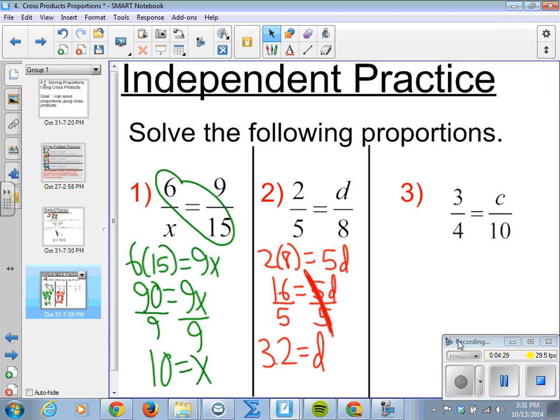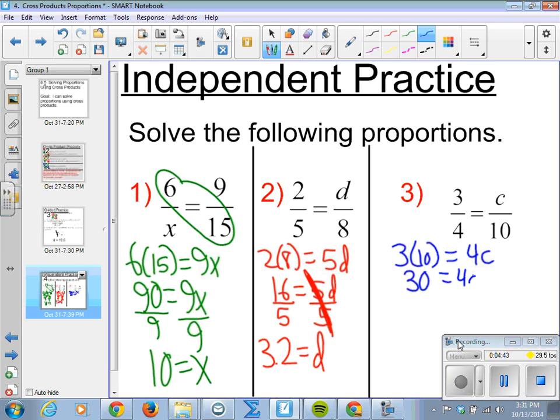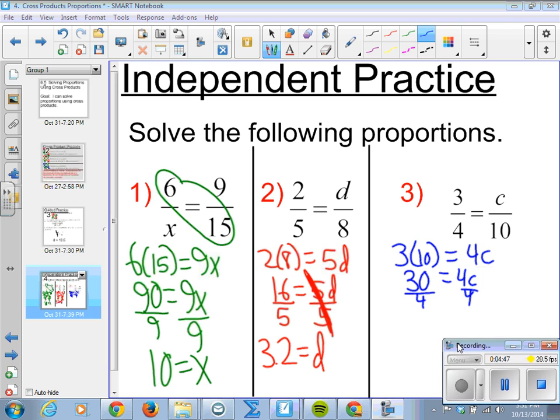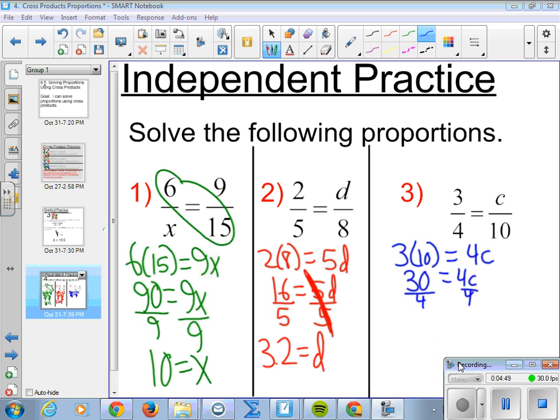And finally, 3 fourths equals c over 10. So, we have 3 times 10 equals 4 times c. 30 equals 4c. Divide both sides by 4. And we have multiple forms here. We get 7 and a half equals c. You can have it as the mixed number or as an improper fraction. All are equivalent. All are correct.